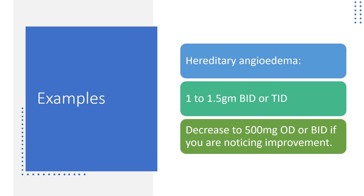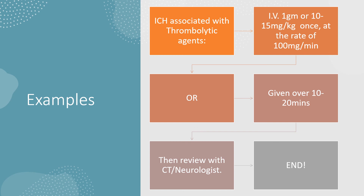For intracranial hemorrhage treated with thrombolytic agents, give intravenous tranexamic acid at 1 gram or 10–15 mg/kg once, at a slow rate of 100 mg per minute, or infuse the calculated dose over 10–20 minutes. Infusing over 20 minutes is preferable to avoid severe hypotension. Review with CT imaging and in consultation with your neurologist.